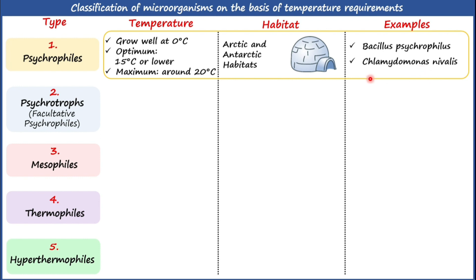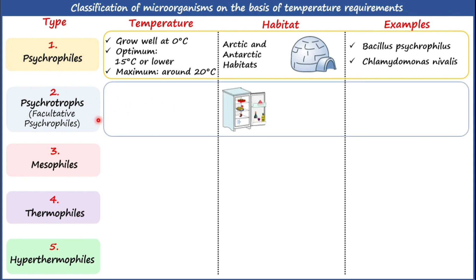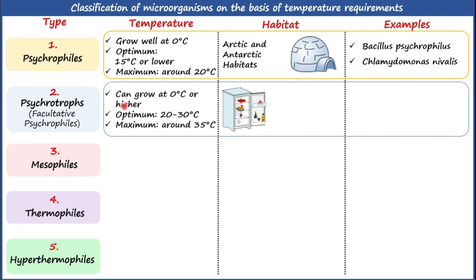The second type is psychrotrophs. Psychrotrophs are also called psychrotolerant microorganisms or facultative psychrophiles. They can easily grow at 0°C or higher, but the optimum temperature supporting the growth of psychrotrophs is 20 to 30°C.